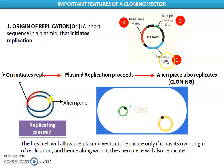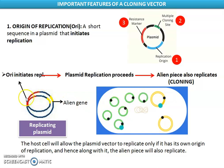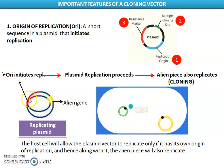First, let me talk about the region called origin of replication. It is a short sequence in a plasmid that initiates replication. When you are using this as a vector, adding an insert at a particular place and then introducing it into a host cell, the host cell will not recognize or identify it unless the plasmid has a region called ORI — origin of replication, written in short as ORI.